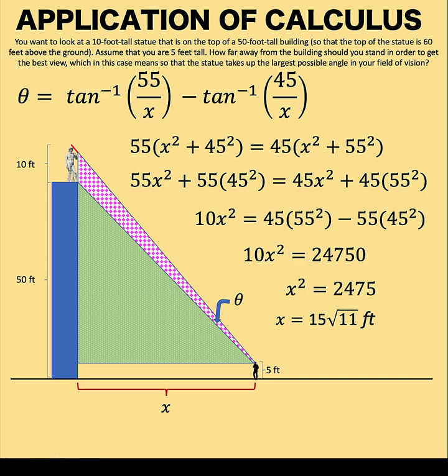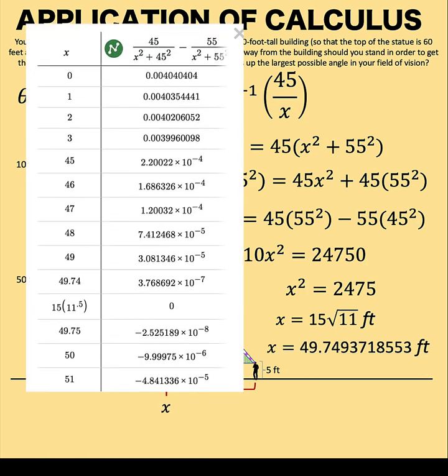We would like to know whether this is the maximum or the minimum. Investigating further, let's look at the table of values from 0 up to 15 square root of 11. Notice that all these slopes are positive, which means that the function is increasing from x equals 0 to x equals 15 square root of 11. Then at exactly 15 square root of 11, the slope is 0, which means that we have the highest possible point at this x value.